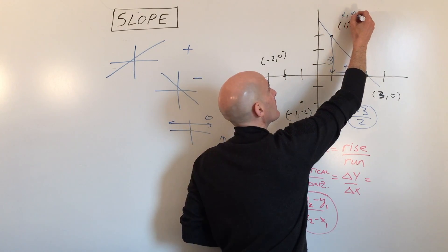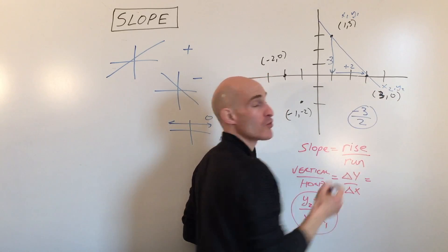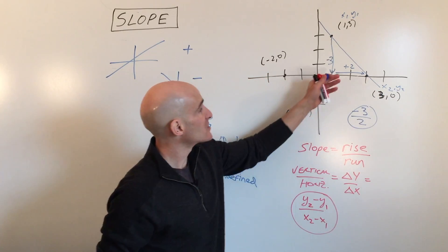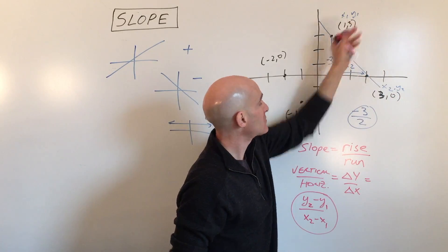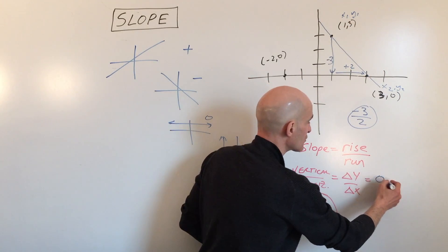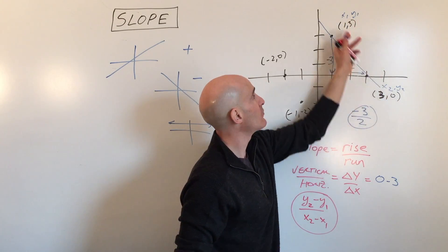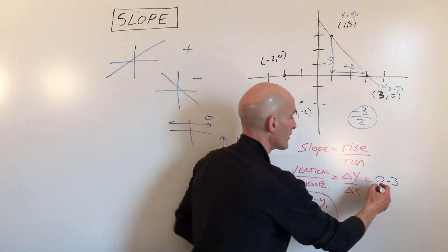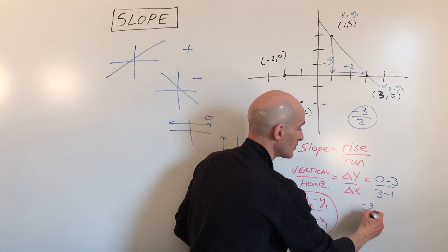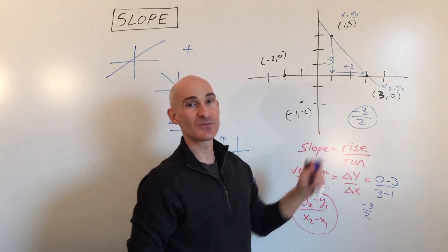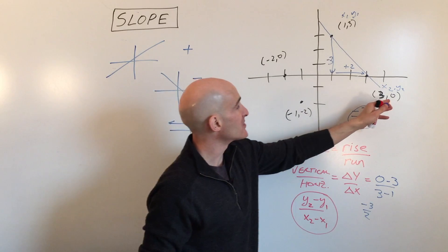If we want to use the formula, we label one point as (x1, y1) and the other as (x2, y2). We do y2 minus y1 over x2 minus x1: zero minus three over three minus one, which gives us negative three over two — the exact same slope.